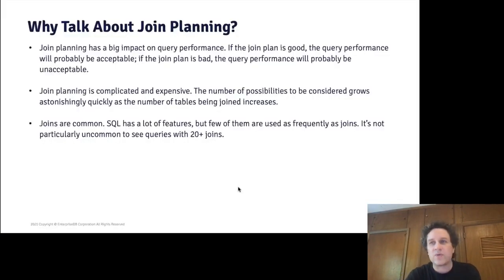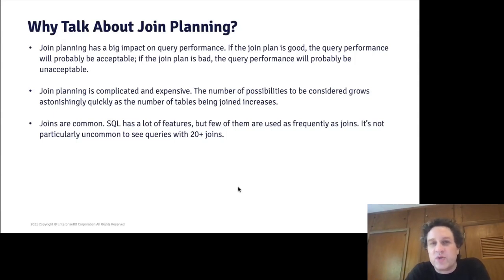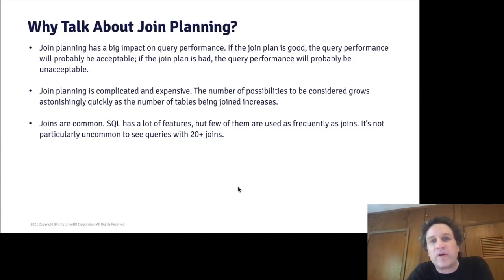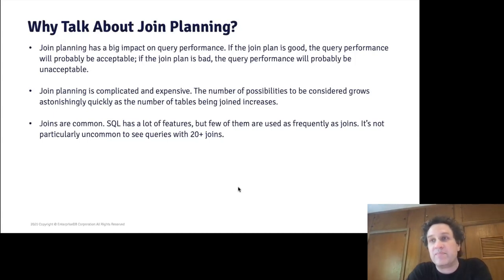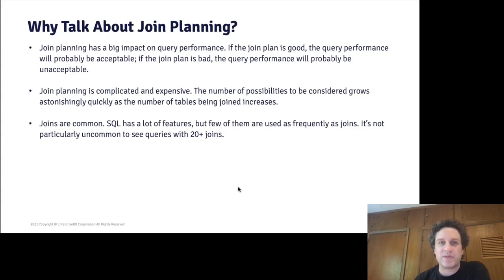The first question about join planning is: why is that interesting? I have three reasons. The first is that join planning has a big impact on query performance. If you get a good plan for the joins in your query, you're probably going to be reasonably happy with the performance. If you get a bad plan, the query is probably going to be so slow that you'll be complaining. It's not always the case, but it's a pretty good indicator — it makes a big difference.